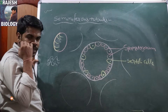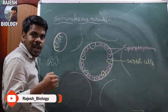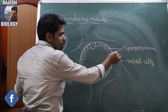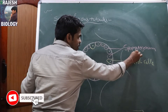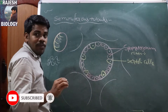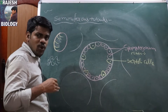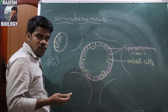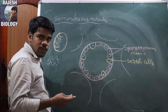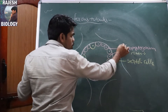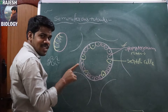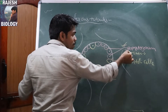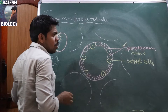Spermatogonial mother cells undergo mitotic division to form primary spermatocytes. Primary spermatocytes undergo first meiotic division to form secondary spermatocytes. Secondary spermatocytes undergo the second meiotic division to form spermatids. Spermatids are then transformed into spermatozoa. So spermatogonial cells help in the formation of spermatozoa — this is spermatogenesis.